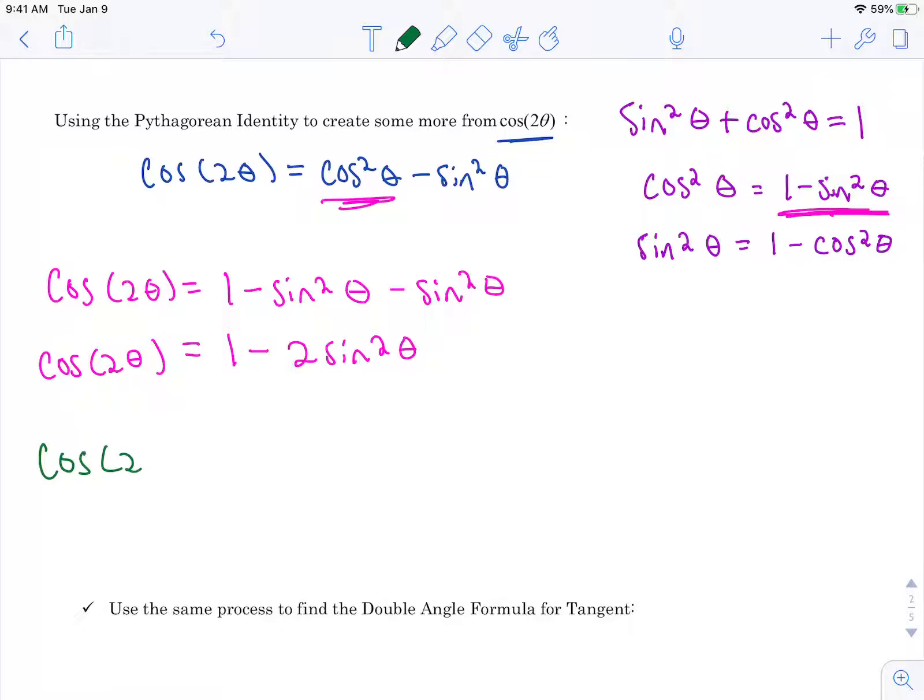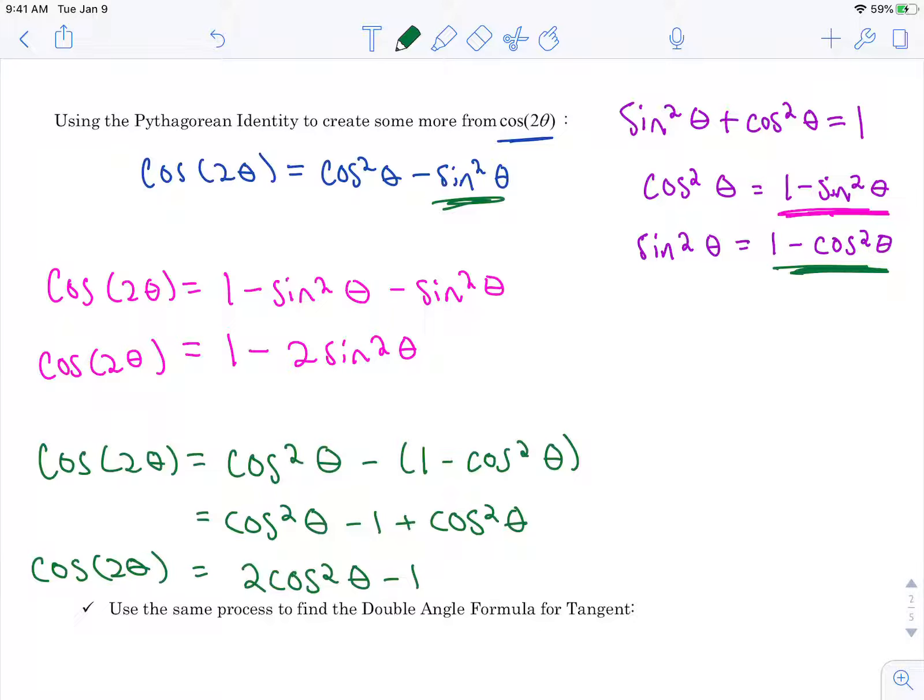So for the other one, now you probably guessed it. I'm going to go ahead and replace sine squared with what it equals due to the identity. So I have cosine squared minus, I'm going to put this in parentheses since I'm taking it all away, and I end up getting a minus 1 plus cosine squared. Combine like terms and I get 2 cosine squared theta minus 1. So here we have 1, 2, 3 formulas for cosine 2 theta. Where for sine we only had 1 and it just works out because of this identity piece.